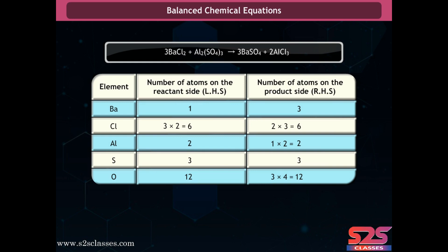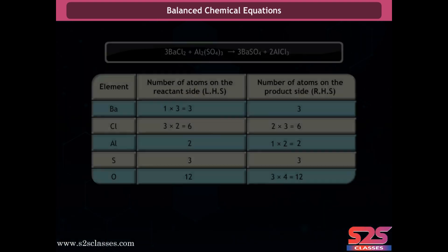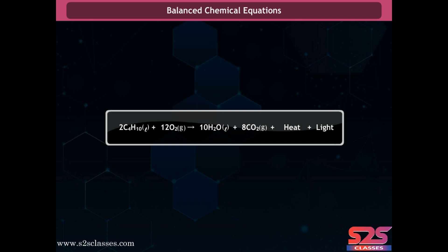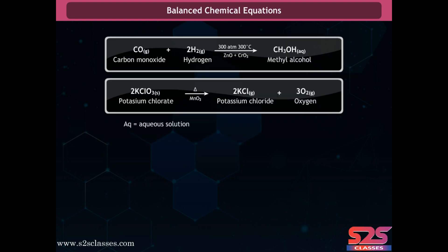Compare the number of atoms again. As oxygen and sulfur atoms are balanced, now balance the atoms of aluminum. Then balance the atoms of barium and chlorine by multiplying on the left-hand side by three to get the balanced equation. To make the equation more informative, the physical state of reactants and products is mentioned along with their chemical formula, and reaction conditions such as temperature, pressure, and catalyst are indicated above or below the forward arrow.